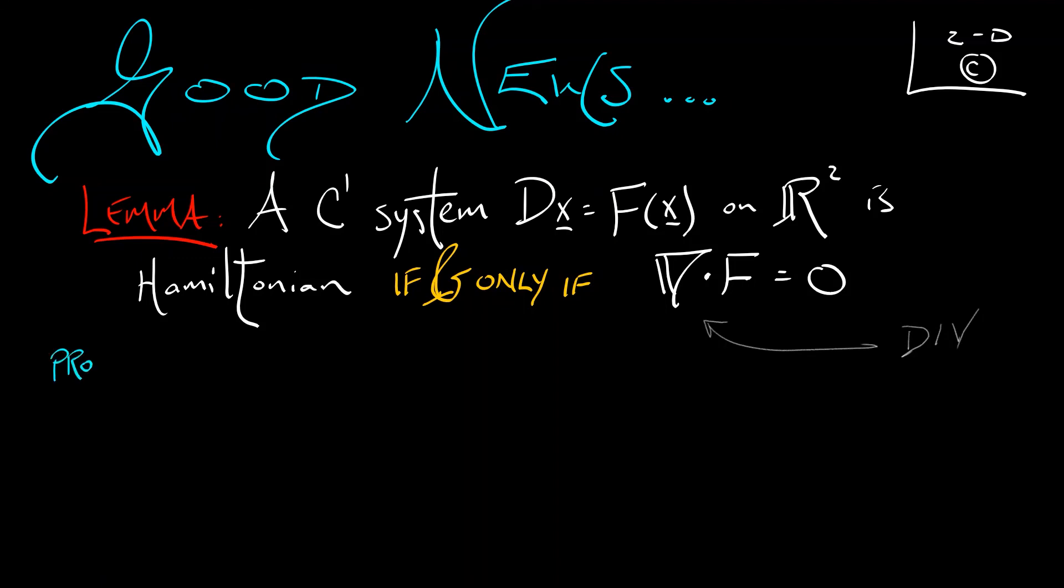Here's the proof. In one direction, so if it's Hamiltonian, the divergence is zero, that's the computation we just did. That all boils down to mixed second derivatives commuting.